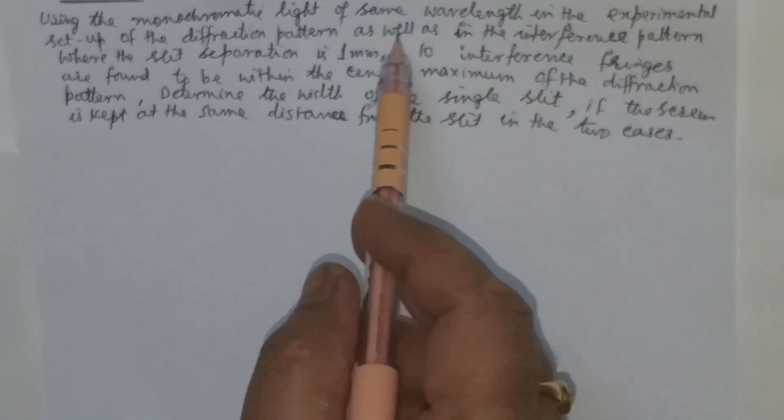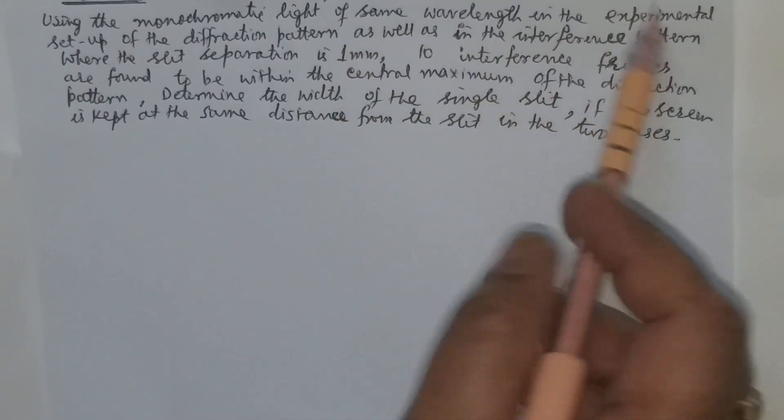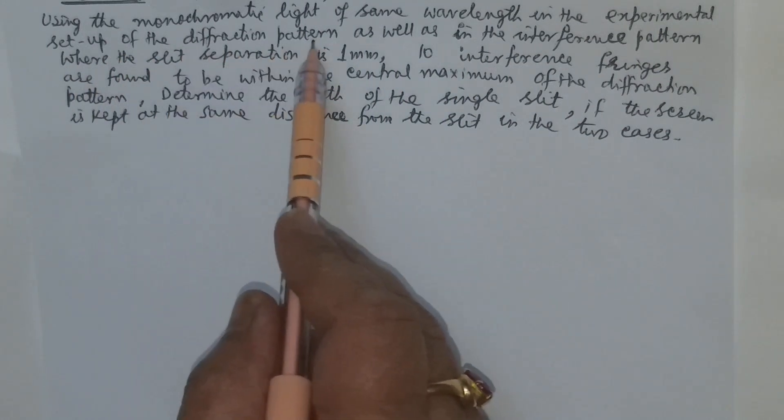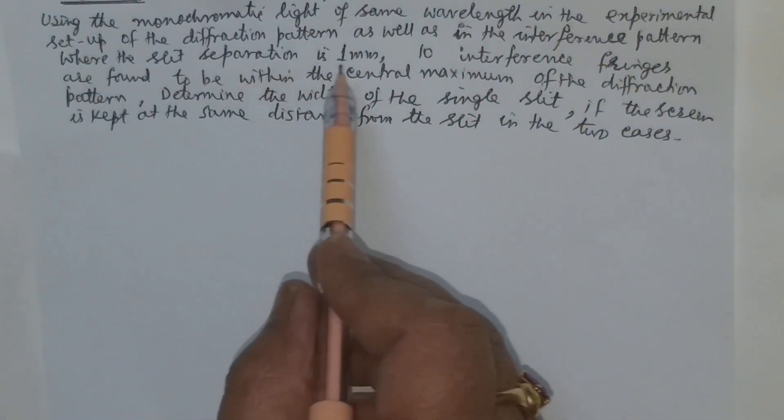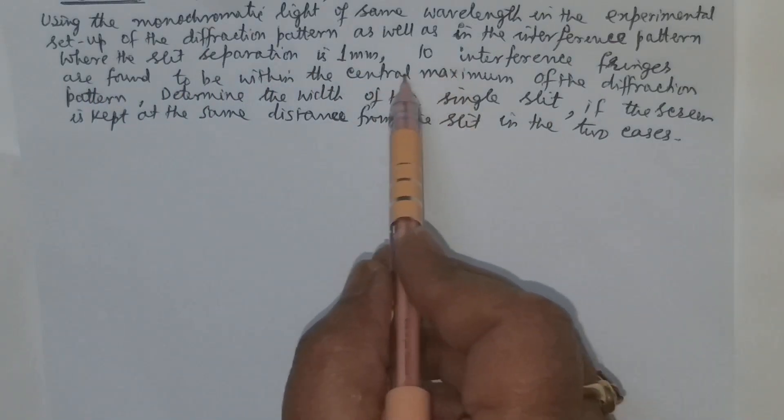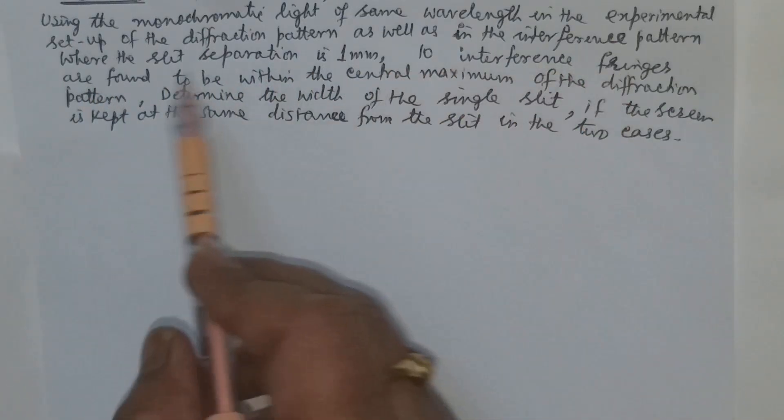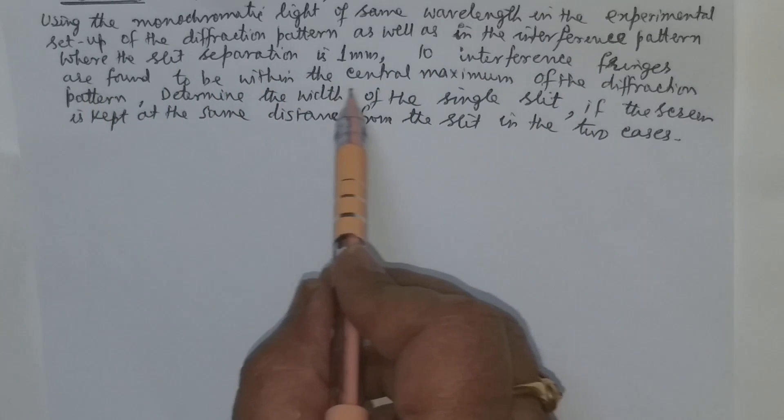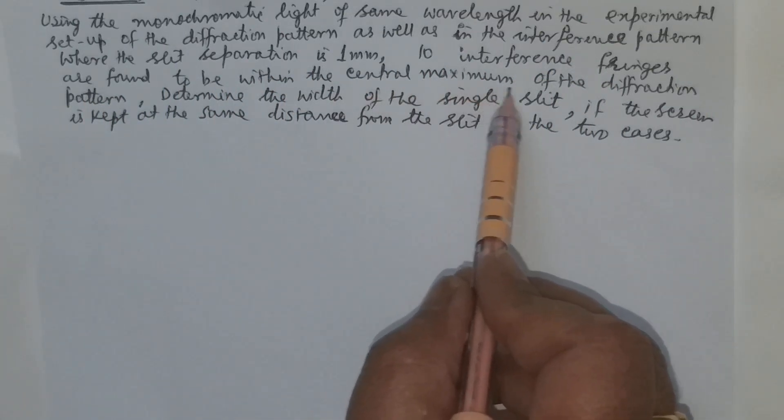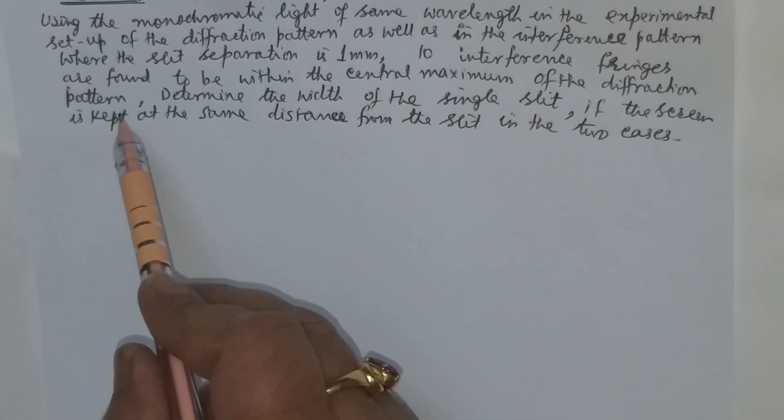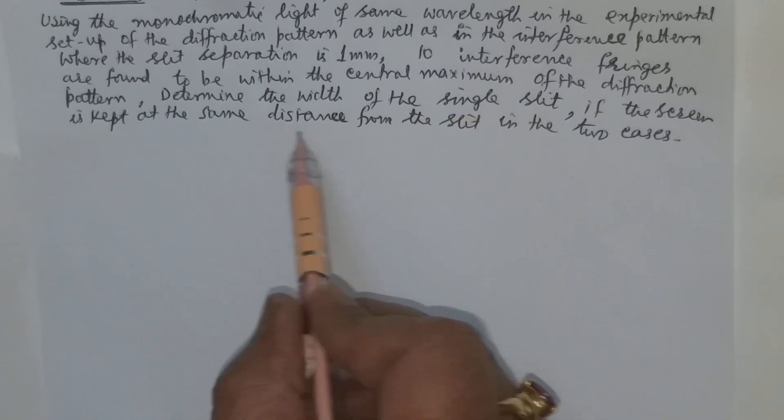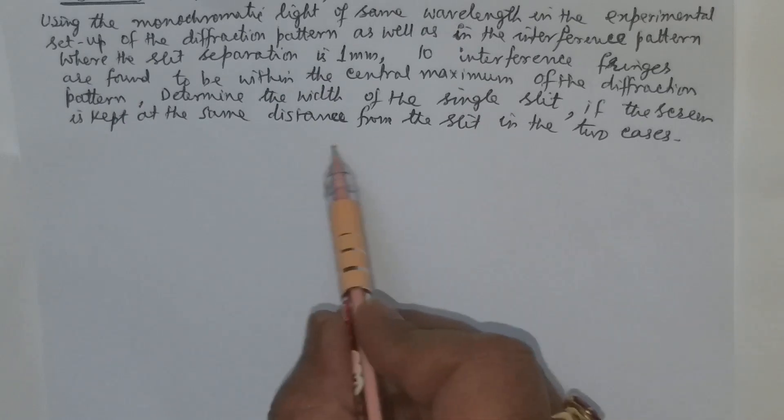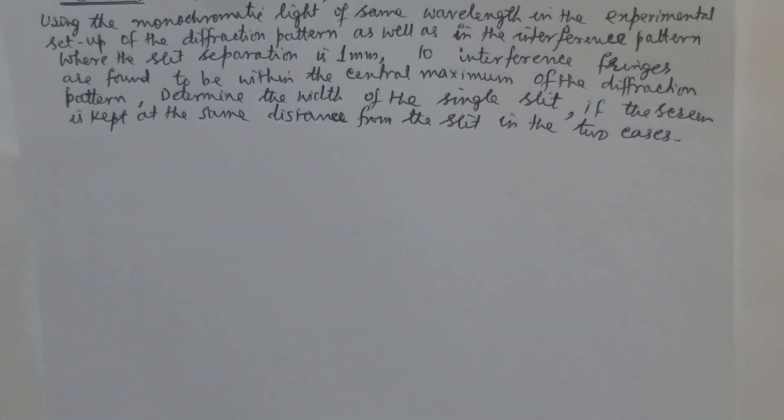Question says that there is a monochromatic light and same wavelength in the experiment setup of diffraction pattern as well as the interference pattern and the slit separation is one millimeter and within that 10 interference fringes are found to be within the central maximum of the diffraction pattern. Determine the width of the single slit if the screen is kept at the same distance from the slit in the two cases.